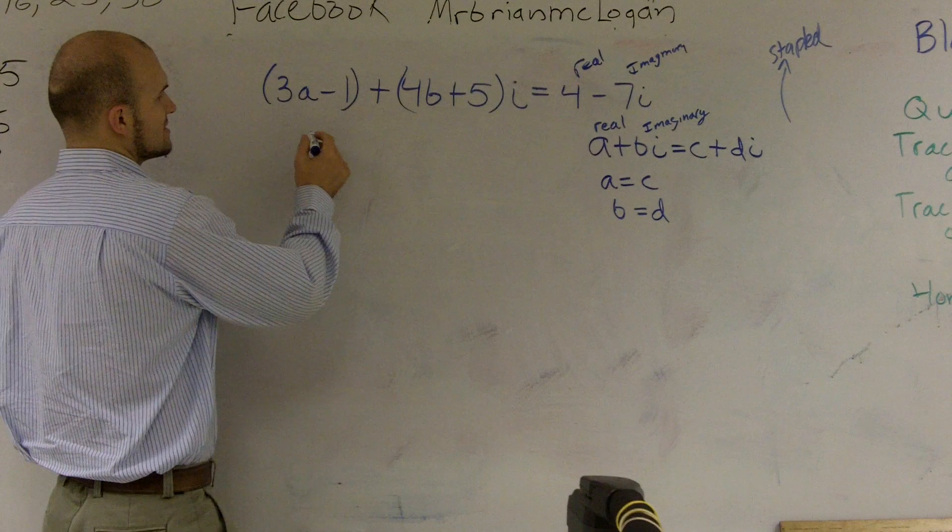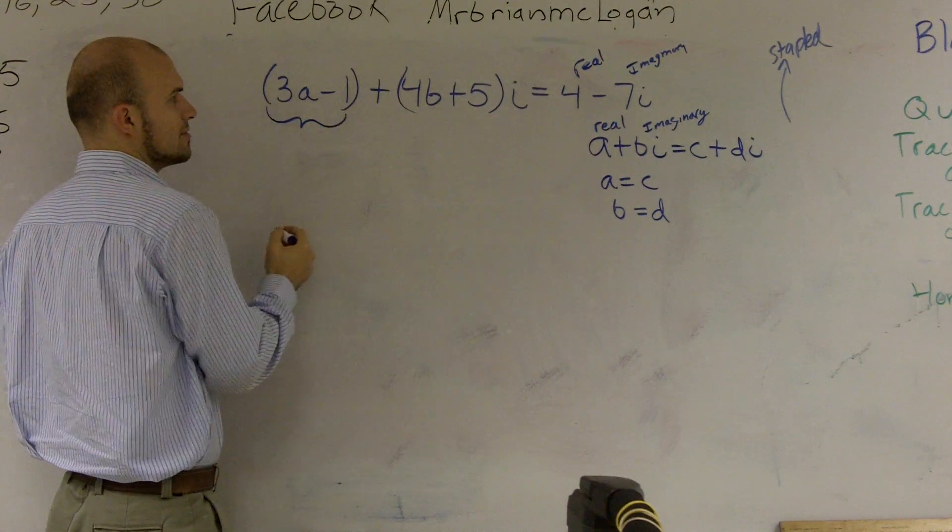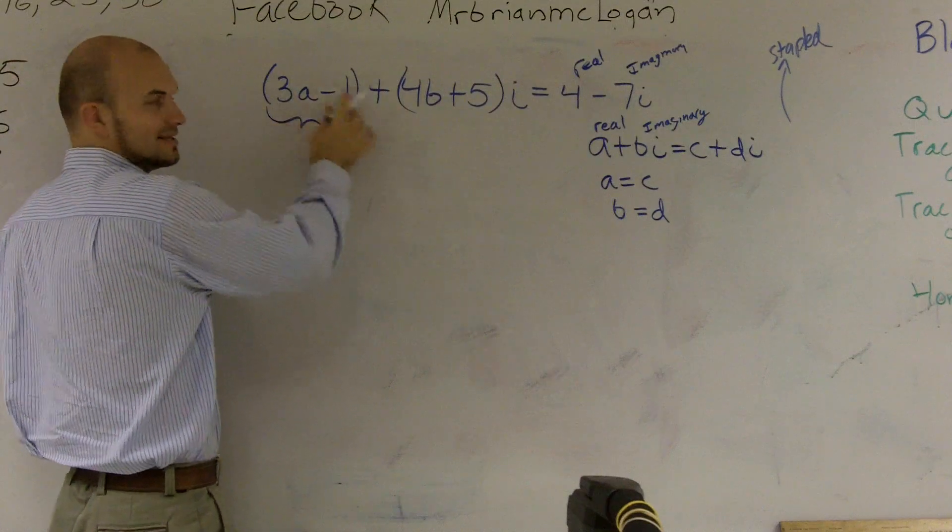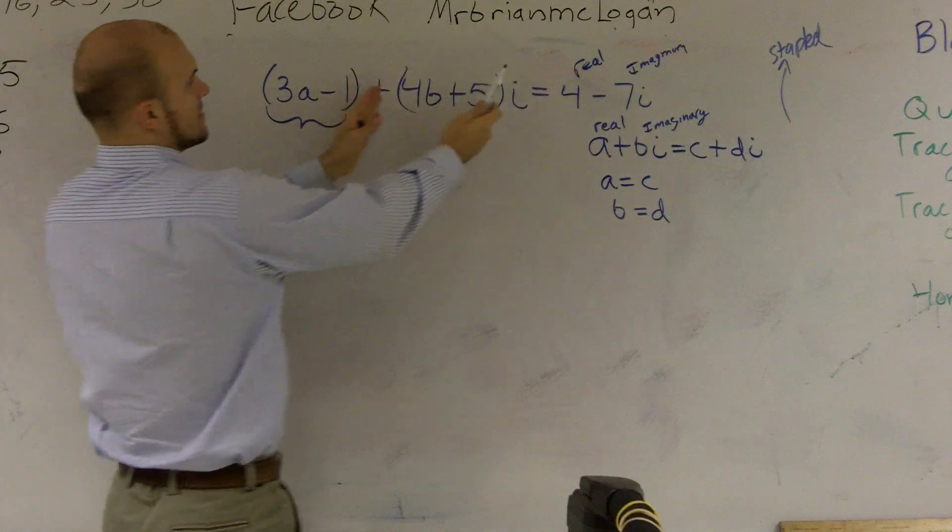Our real in here is you could probably write this as like this. You could say that this whole thing is our real number. It's not just your a, but it's everything that's in that bracket. Because if you've got to look at this, this is like a plus bi.